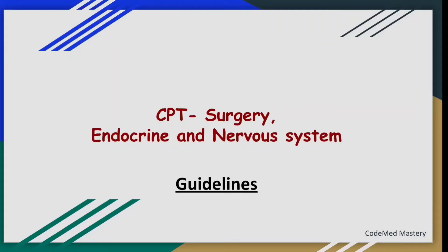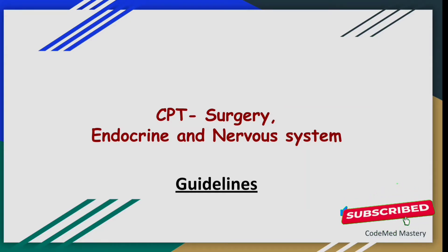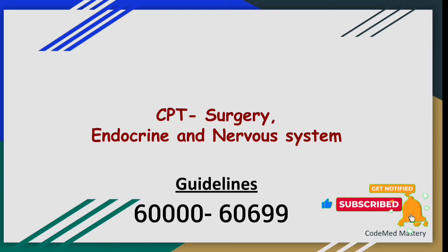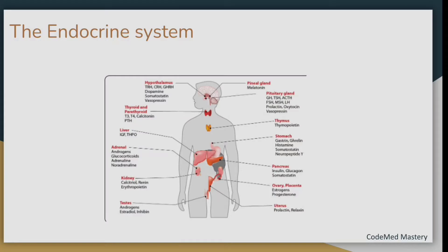In this video we'll start a new topic: CPT Surgery - Endocrine and Nervous System guidelines. Let's start with the endocrine system. The code range is 60000 to 60699.